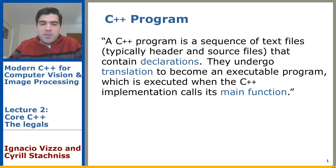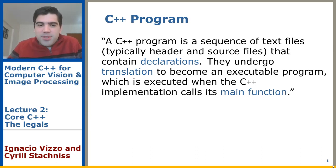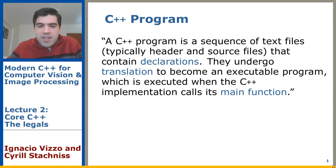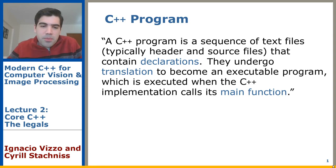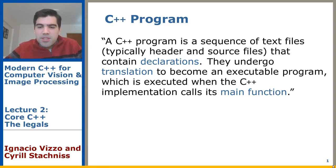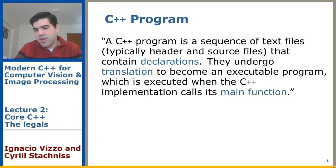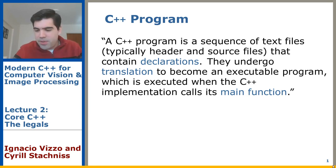Here is the definition of what we think a C++ program is: it's basically a sequence of text files — the .cpp and .hpp files — that contain declarations, and they undergo a translation to become an executable program which is executed when the C++ implementation calls its main function.